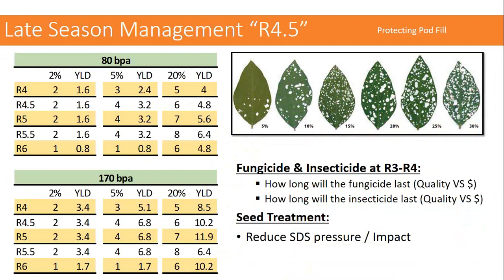The next management layer people are starting to discuss is called R4.5 — protecting the crop going into R5 and R5.5. Looking at standard defoliation pictures and percent yield drag at different growth stages, if we're targeting 170 bushels and have 20% defoliation, that's a significant window at R4.5 and R5 where any disease or issue could impact top-end yield. Early planting helps here too — planting earlier means more nodes, more potential blooms and pods per node, so each node doesn't have to work as aggressively.